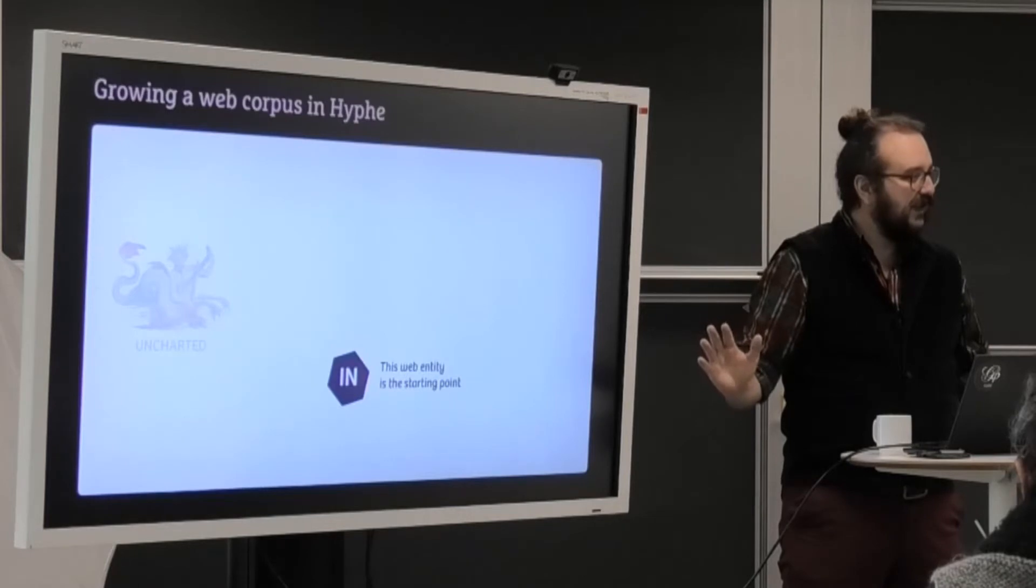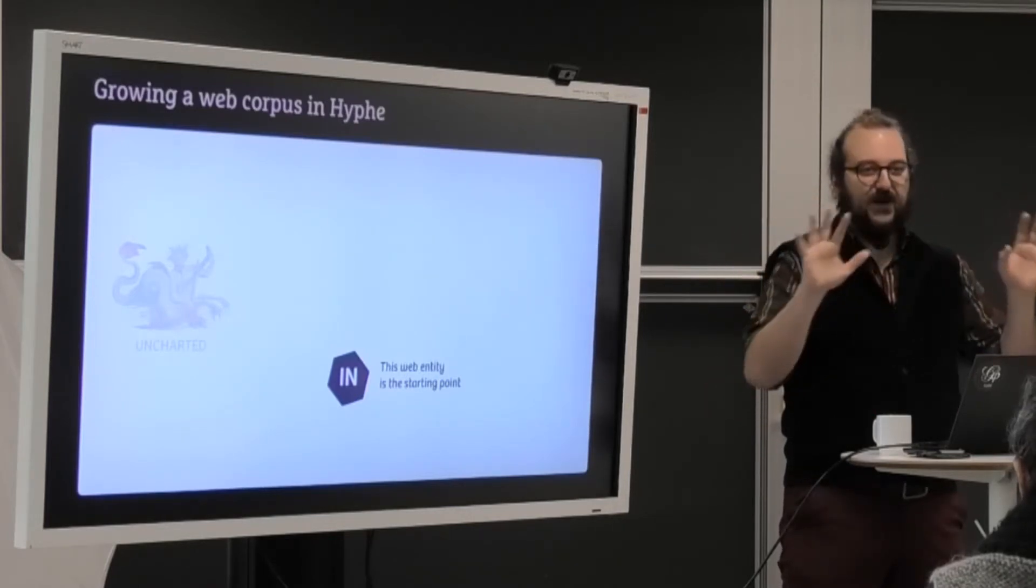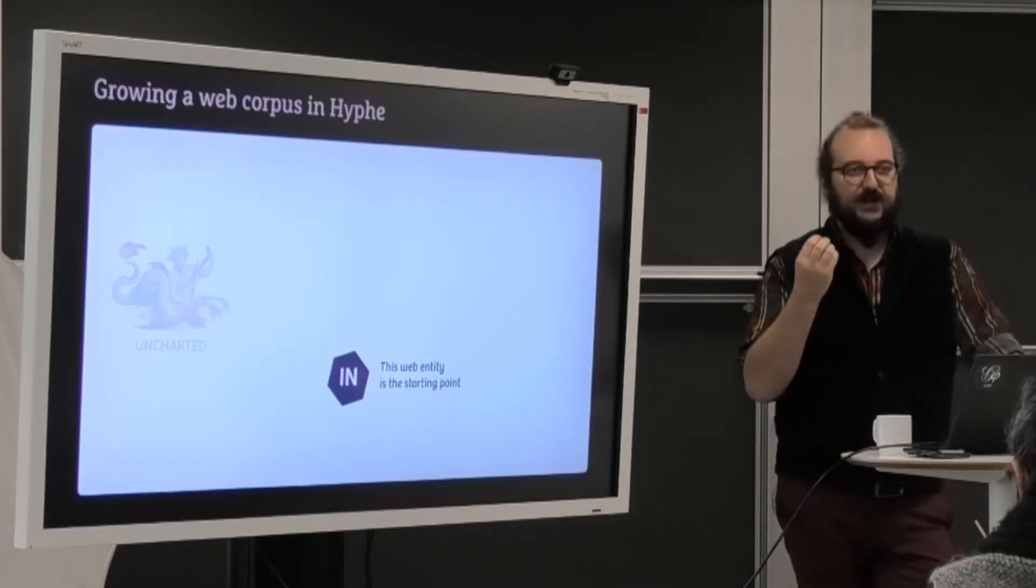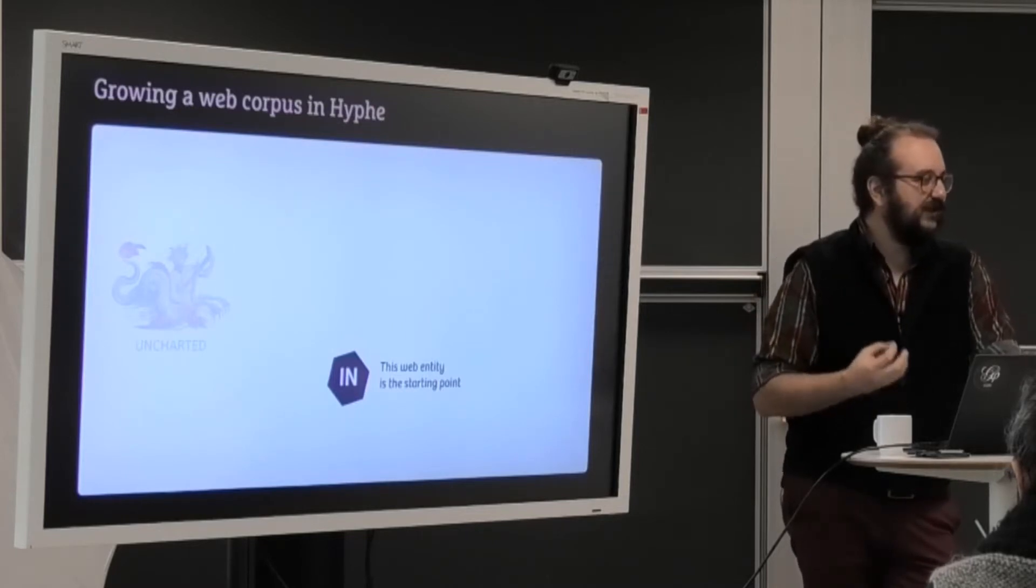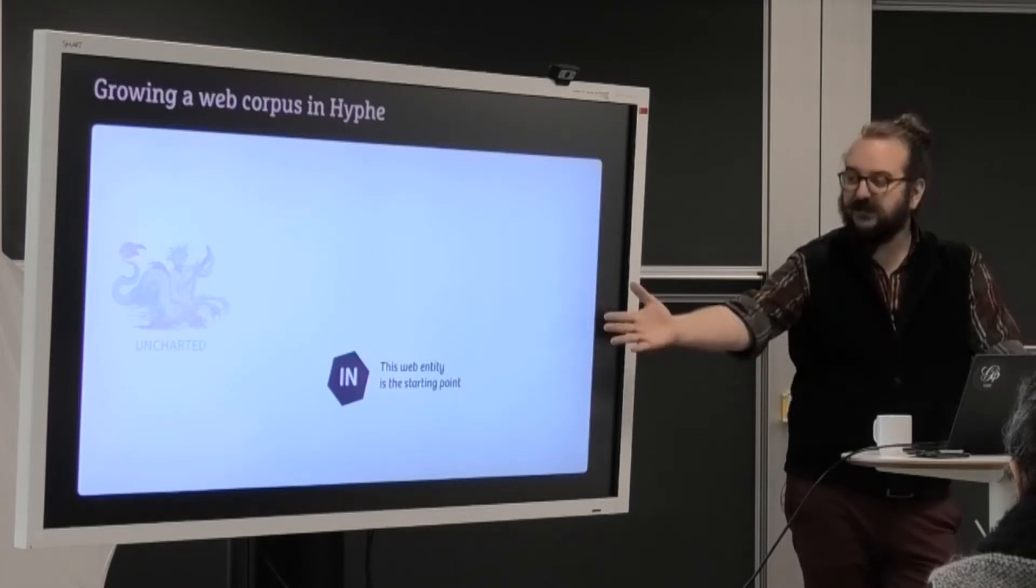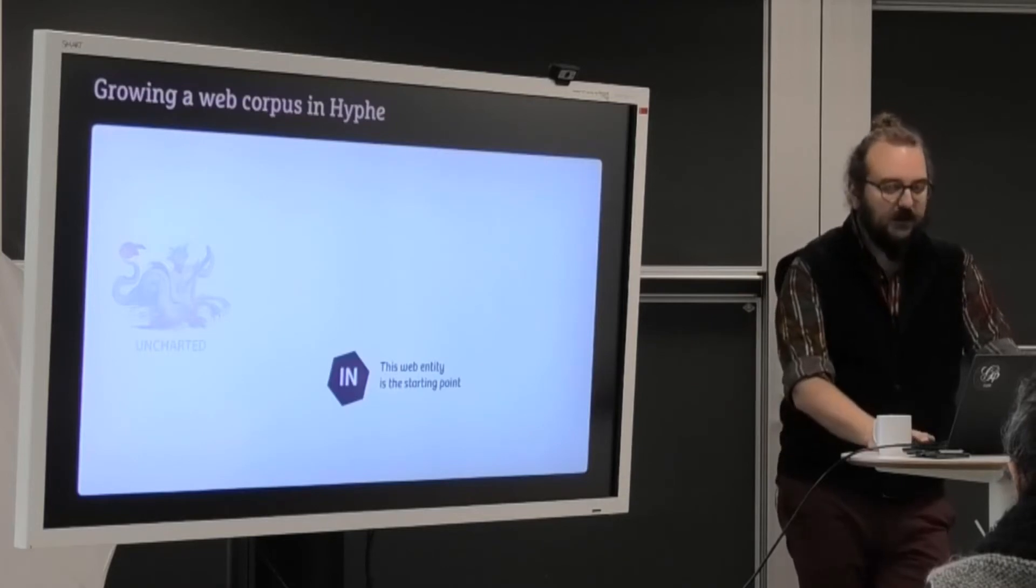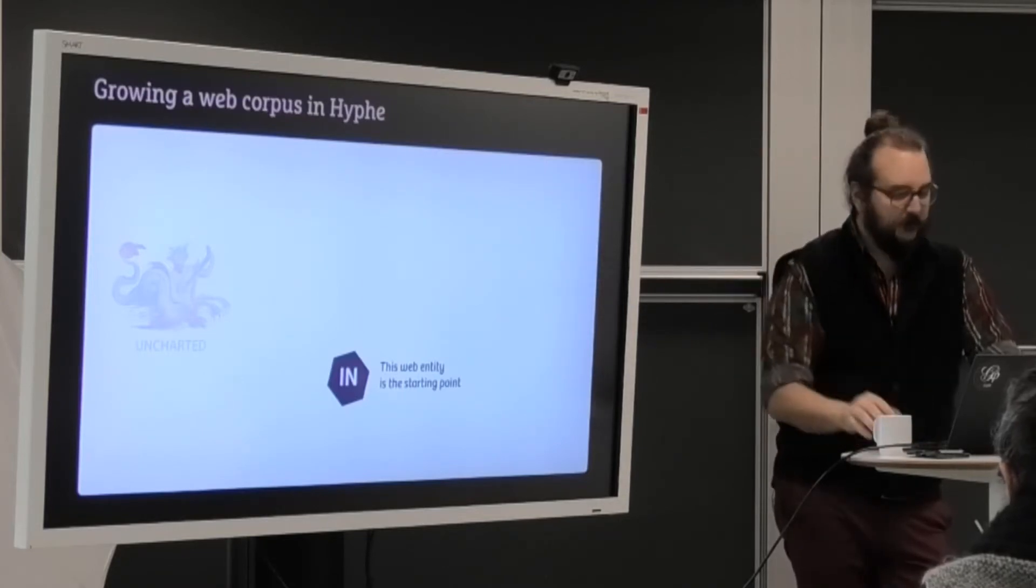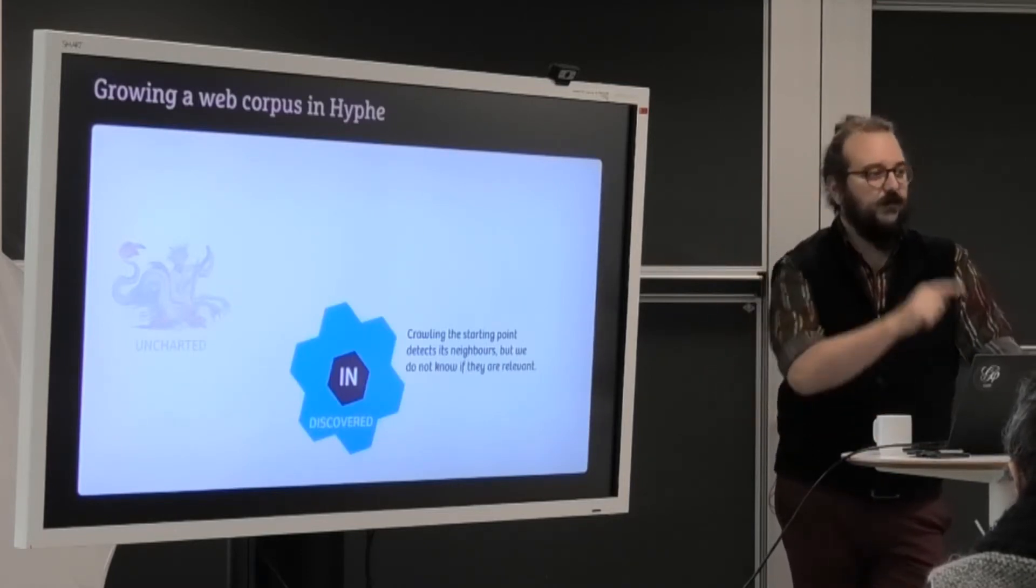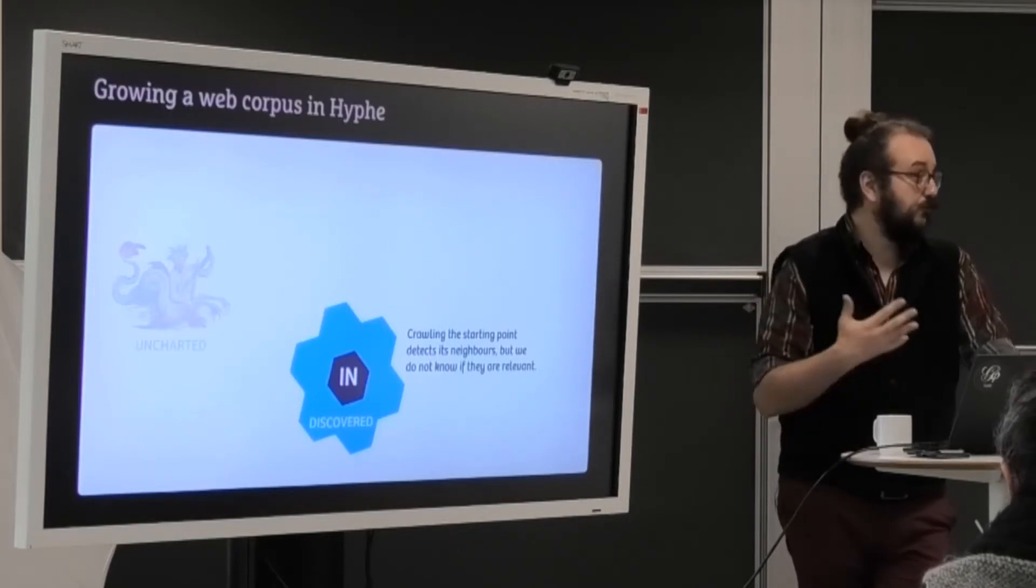So let's deal with the web as if it were a map, a territory, like a normal flat map. You start by having a few starting pages, starting web entities. You put that in Hyphe and they become the IN. So let's say we have one here, one web entity. It's set to IN and we crawl it. And when we crawl it, we find hyperlinks to other new web entities. It means we know the border of this web entity. The border of the web entity is DISCOVERED. We presume it exists, but we've not crawled them.